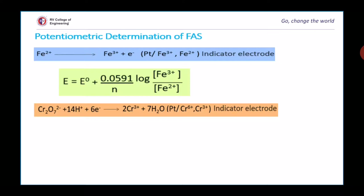And the Nernst equation for this is: E = E° + 0.0591/n log([Cr⁶⁺]/[Cr³⁺]).